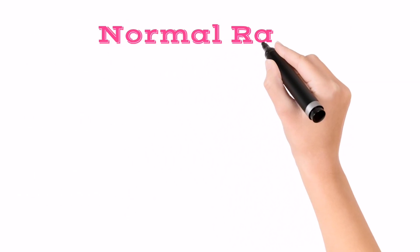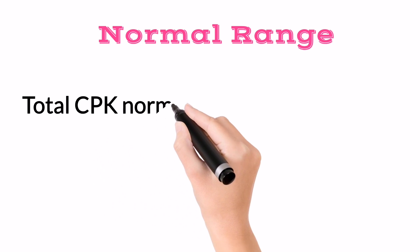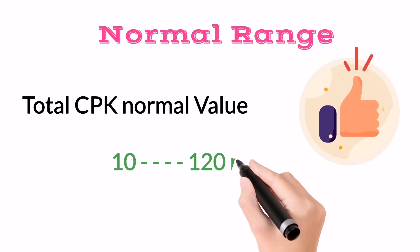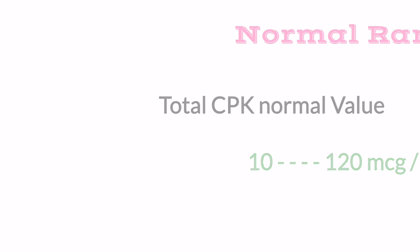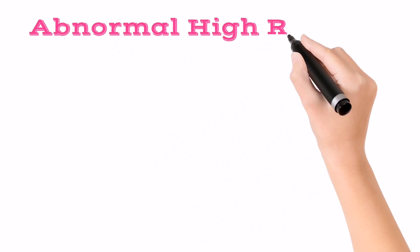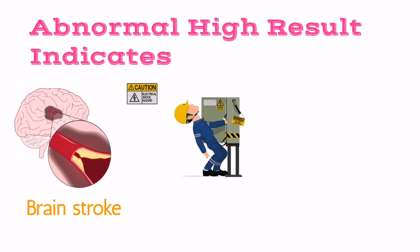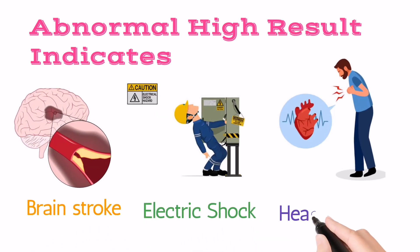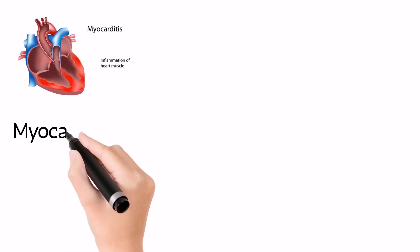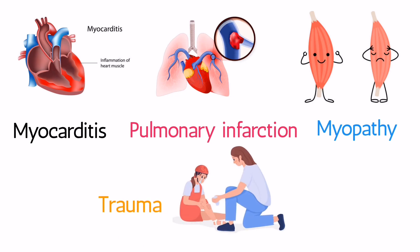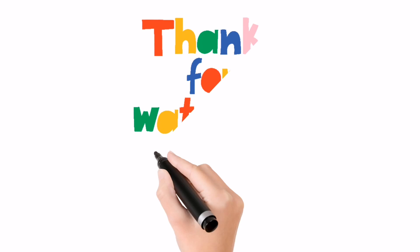The total CPK reference range is between 10 to 120 micrograms per liter. Now if the CPK result is high, what does it actually indicate? If the value is abnormally high, it may be due to brain stroke, electric shock, heart attack, myocarditis, pulmonary infarction, myopathy, or trauma. These are the basic reasons which elevate the CPK level in the blood.